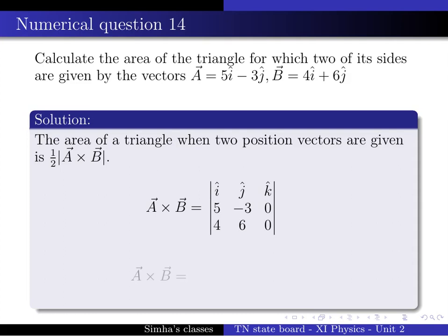Now we calculate the determinant. For the i term: minor is (minus 3 × 0) minus (0 × 6), which equals 0, so the first term is 0. Minus j term: minor is (5 × 0) minus (0 × 4), which equals 0, so the second term is also 0.